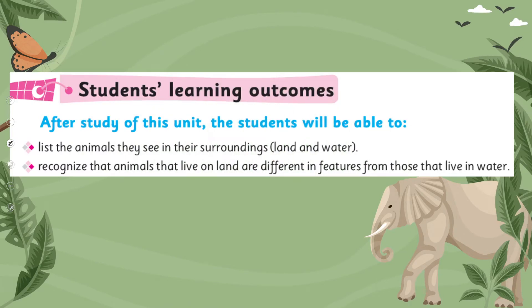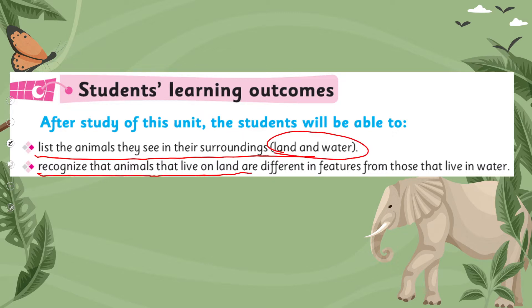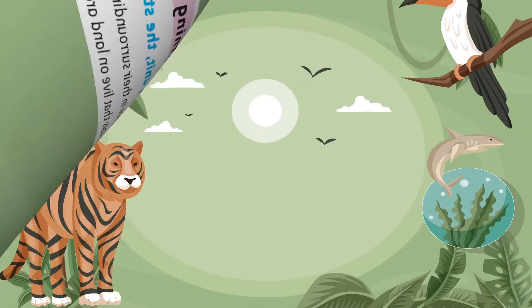In today's lecture, students will be able to list the animals they see in their surroundings, whether they live on land or in water. They will recognize that animals that live on land are different in features from those that live in water. These differences will be discussed going forward.